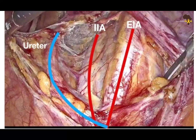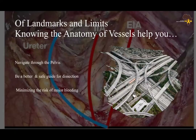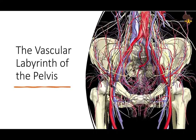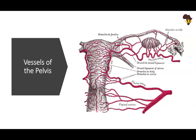Going into the retroperitoneum — knowing the anatomy of these vessels is going to help you navigate through this pelvic labyrinth. To be a better safeguard for dissection and minimize the risk of major bleeding, you cannot approach this area without knowledge of the anatomical vasculature. The main vessels we are interested in are the uterine artery, the ovarian artery, the internal iliac artery, the vaginal arteries — these form the labyrinth of the pelvis.